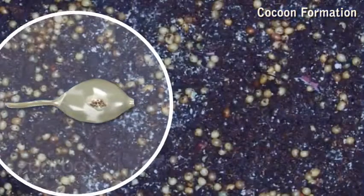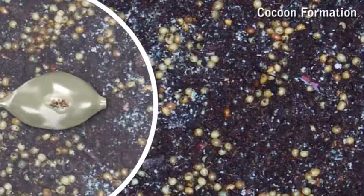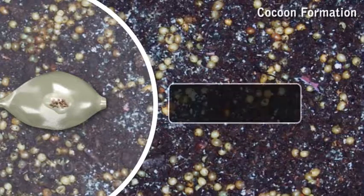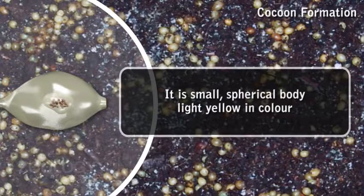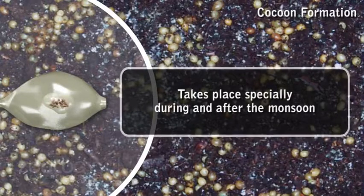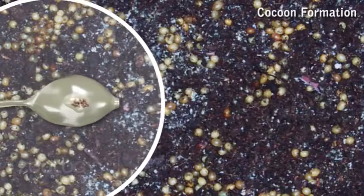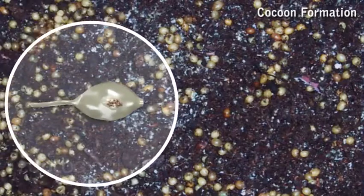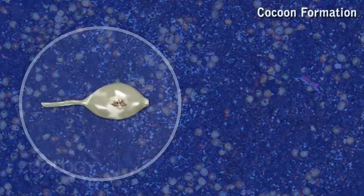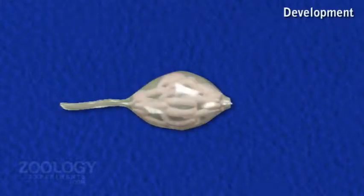Fertilization occurs after the cocoon has been deposited in a moist place. The cocoon of Ferretima is a small spherical body, light yellow in color. Cocoon formation takes place in Ferretima after the monsoon. Many cocoons may be formed in succession after each mating, so that old sperm stored in the spermathecae are not passed out at once.